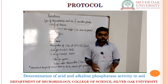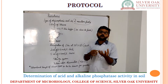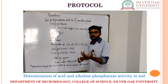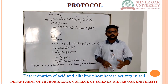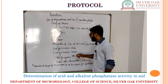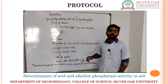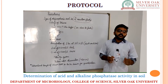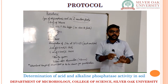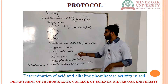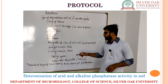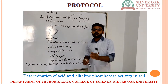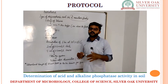After that, we just have to filter the system in order to remove the excessive soil particles. Whatever filtrate we have obtained, we will check its OD on the spectrophotometer at 420 nm. Now, whatever OD we obtain, we will compare it with the standard graph of p-nitrophenol, and by that we will be able to figure out the phosphatase activity in our sample.